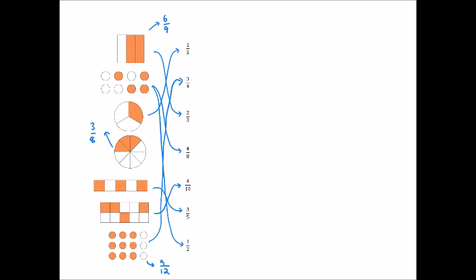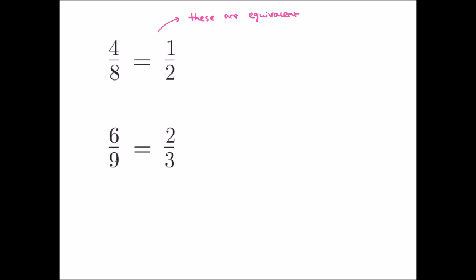So we've now answered all of the questions, and hopefully this was just a recap for you. Moving forward we're going to consider those diagrams which had more than one fraction matched with them, and think about why. For example, four eighths was also represented as one half, and six ninths was equal to two thirds. We say that these fractions are equivalent — in other words, they're exactly the same. In each pair, the fraction with the smaller numbers on the numerator and denominator is in its simplest form.